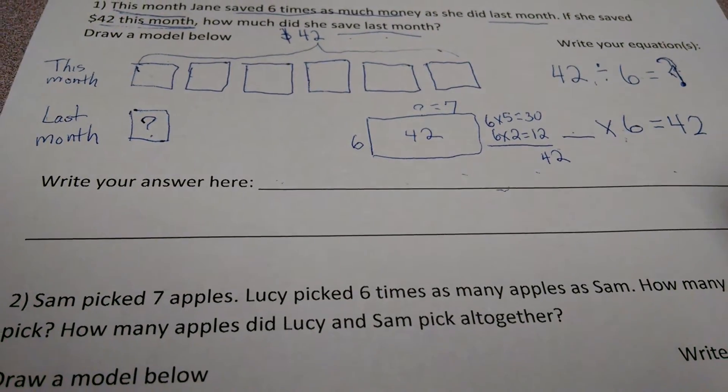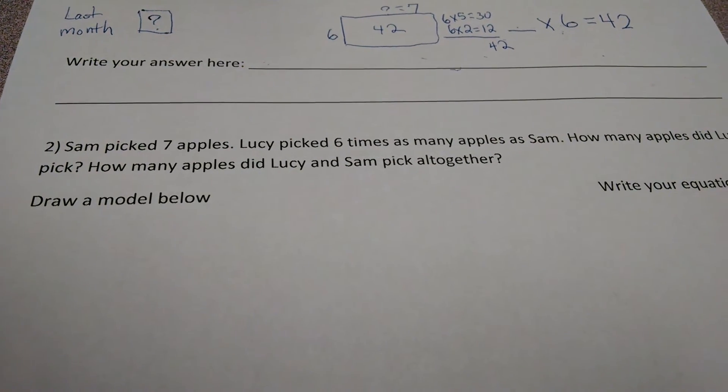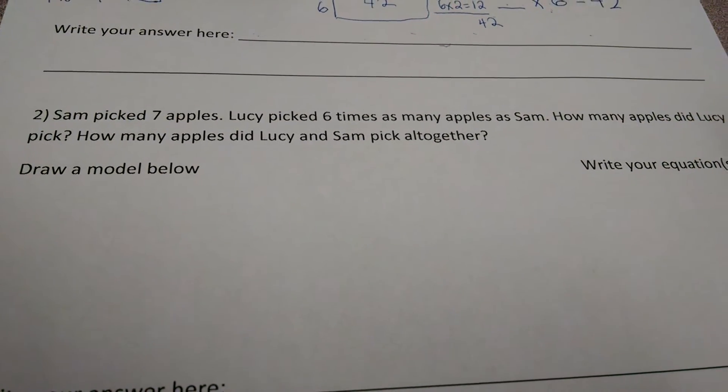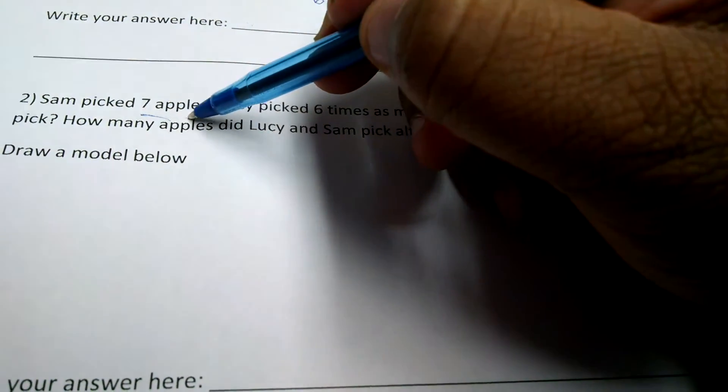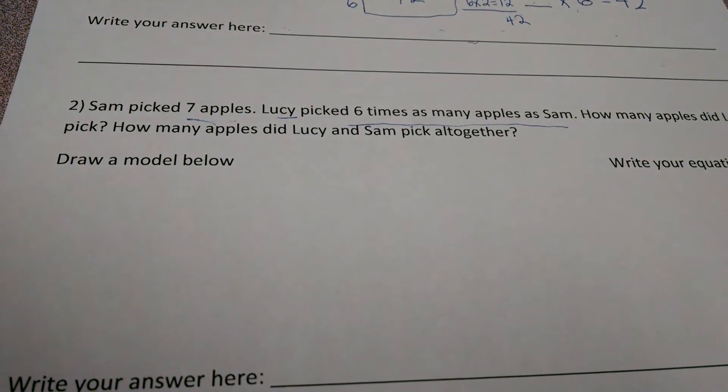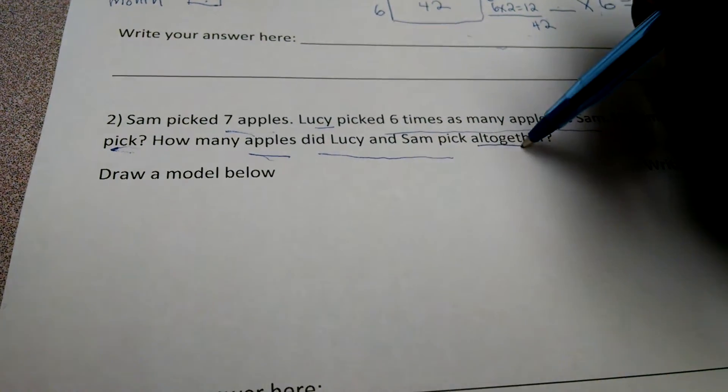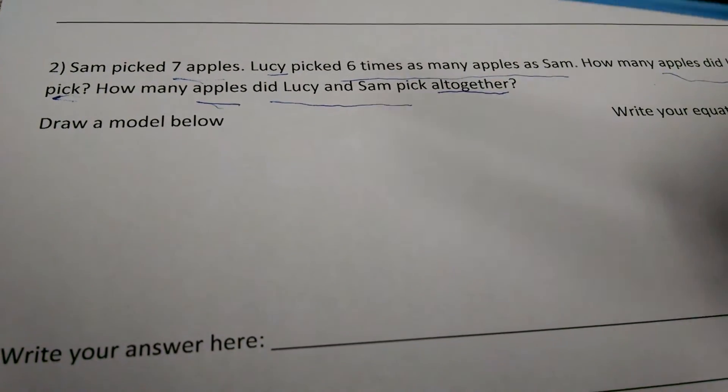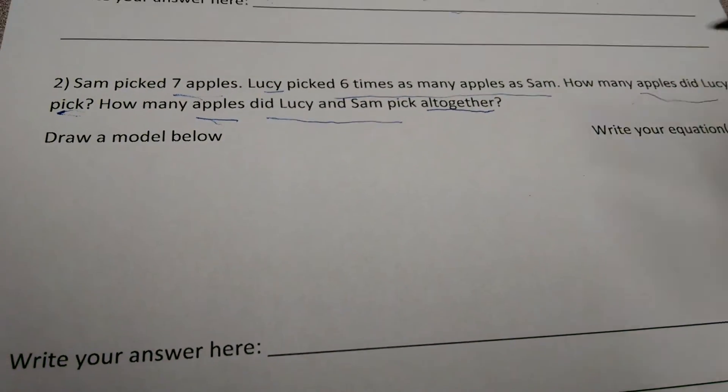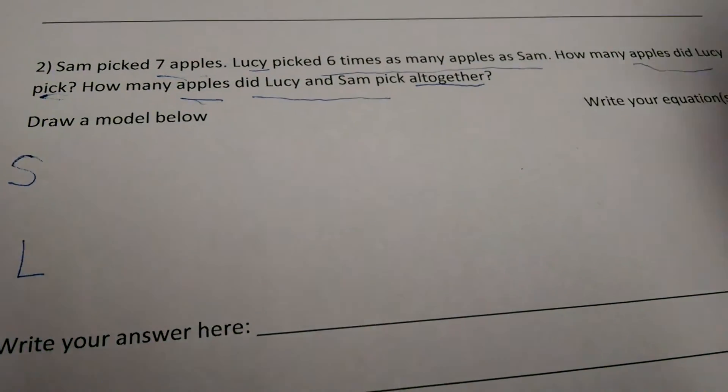So, when you do the other word problems, sometimes there might be more than one step. Let's check this one out. Sam picked seven apples. Lucy picked six times as many apples as Sam. How many apples did Lucy pick? How many apples did Lucy and Sam pick all together? Now, when I hear the word all together, I know I'm going to do some addition. But first, let's go back. I underline as I read. Let's draw the model.